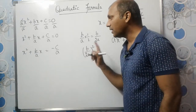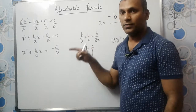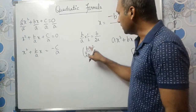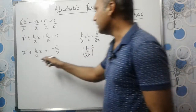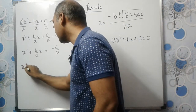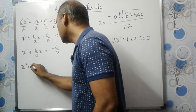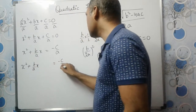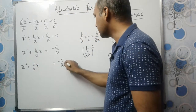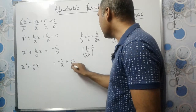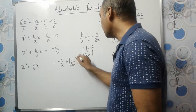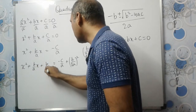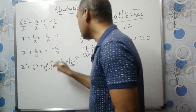That's why I highly recommend you go watch my previous video on completing the square method. So b by 2a whole squared should be added on both sides. Our equation x squared plus b by a times x equals minus c by a — we are adding b by 2a whole squared to both sides.